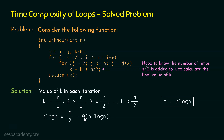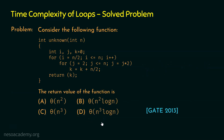Therefore θ(n² log n) is the asymptotic value of k in theta notation. This means the return value of this function is θ(n² log n), so the correct option is option B: theta of n square log n.